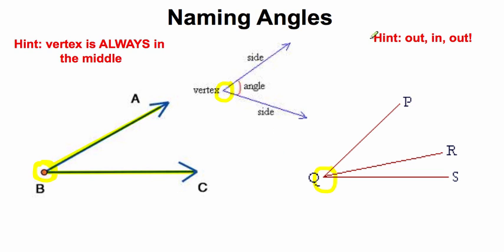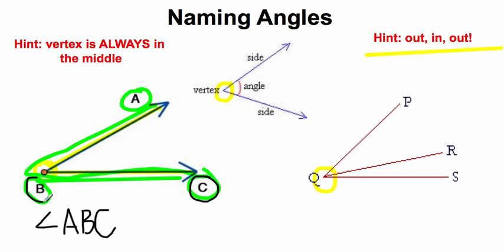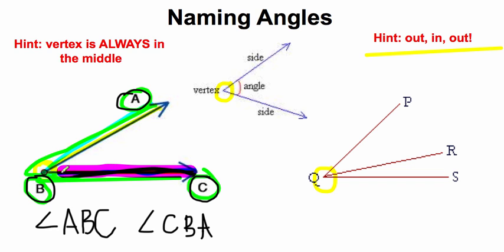When we're naming angles, we always want to go out, in, out. So for this angle, I'm going to start out at A, go in to B — the vertex — and then go back out to C. So I would name this angle A, B, C. We put a little angle sign in front of it, so this means angle ABC. We can also go the opposite way: start out at C, go in to B, and back out to A — so this could also be angle CBA. So we have angle ABC going this way, or angle CBA going that way.